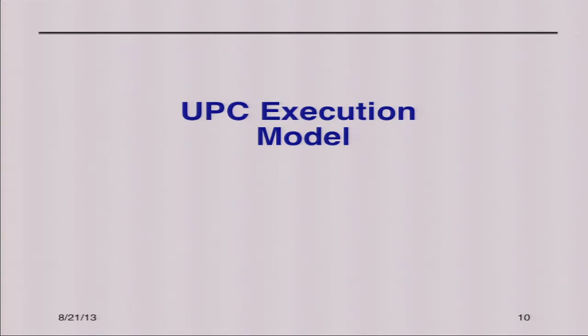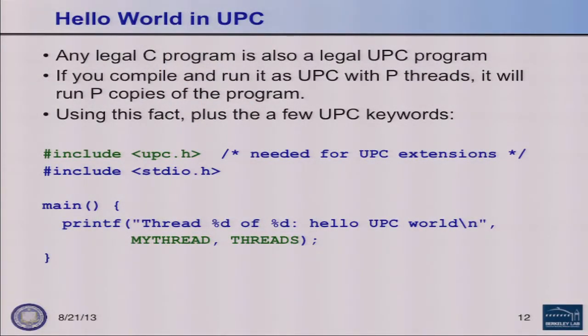I'll do a brief tutorial then talk about UPC performance. There's a larger set of slides online. UPC's Hello World example illustrates the execution model: it's a single program multiple data model, like MPI. Every process has its own copy of main and the code, running simultaneously from the beginning. They don't stay in lock-step — one thread can call a function others don't — but they proceed through the same code.